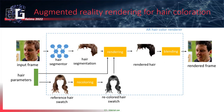A similar system can be applied for hair coloration. For a given input user and hair parameters, part of the system segments the user's hair, and the hair parameters are applied to a reference hair swatch, recoloring it to a targeted hair swatch. The target hair swatch is then blended with the segmented user hair to produce the rendered hair, which is blended back into the input image.